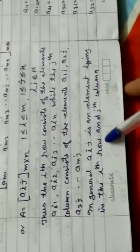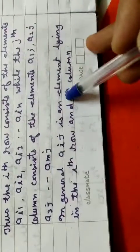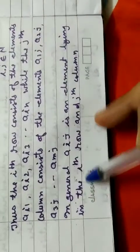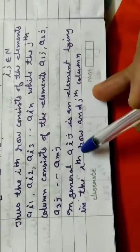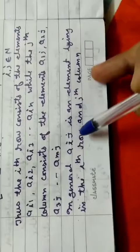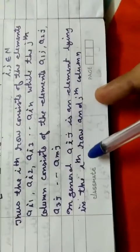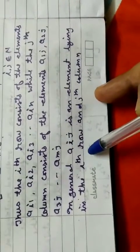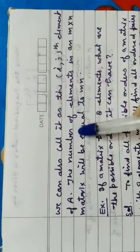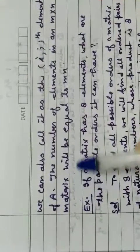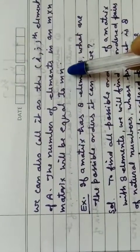In general, aij is an element lying in the ith row and jth column. Similarly, a23 is an element lying in the second row and third column. We can also call it as the ijth element of a. The number of elements in an m by n matrix will be equal to m times n.